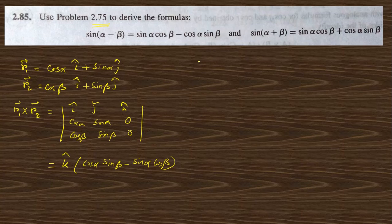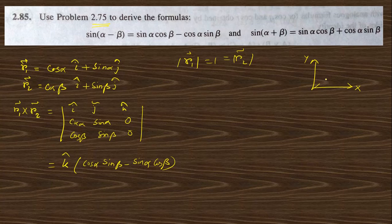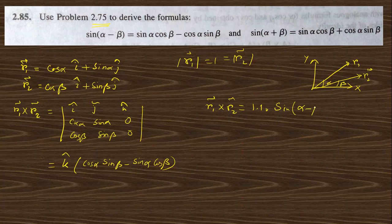Since r1 and r2 are unit vectors, |r1| = |r2| = 1. Geometrically, if r1 makes angle α and r2 makes angle β with the x-axis, then r1 cross r2 = 1·1·sin(α − β) in the downward direction, which is −sin(α − β) k cap.